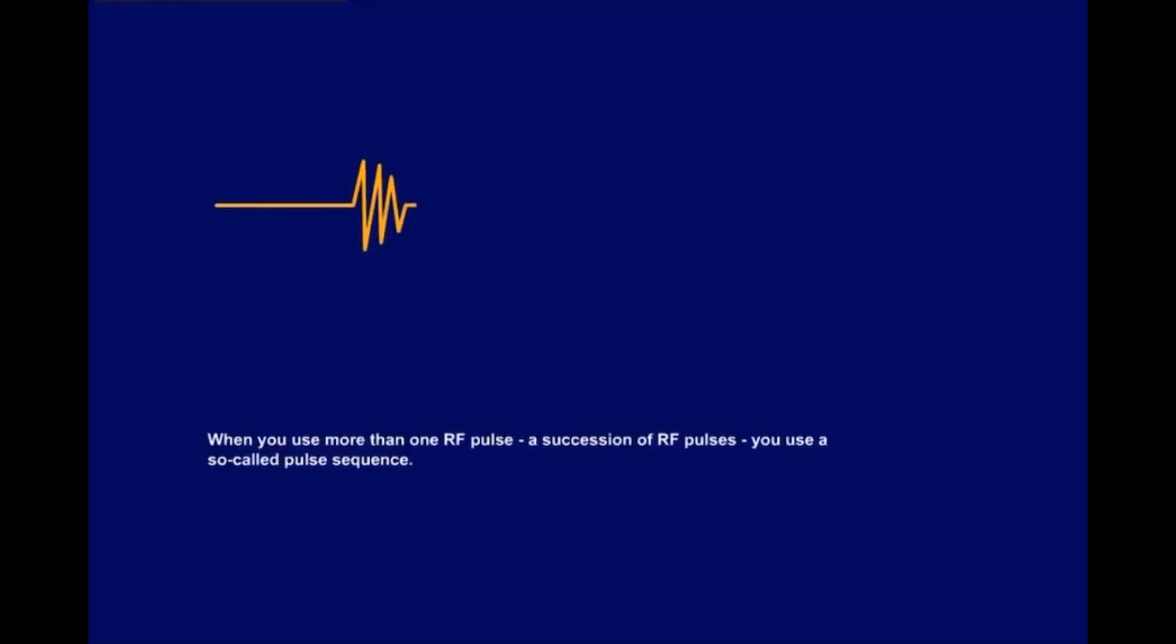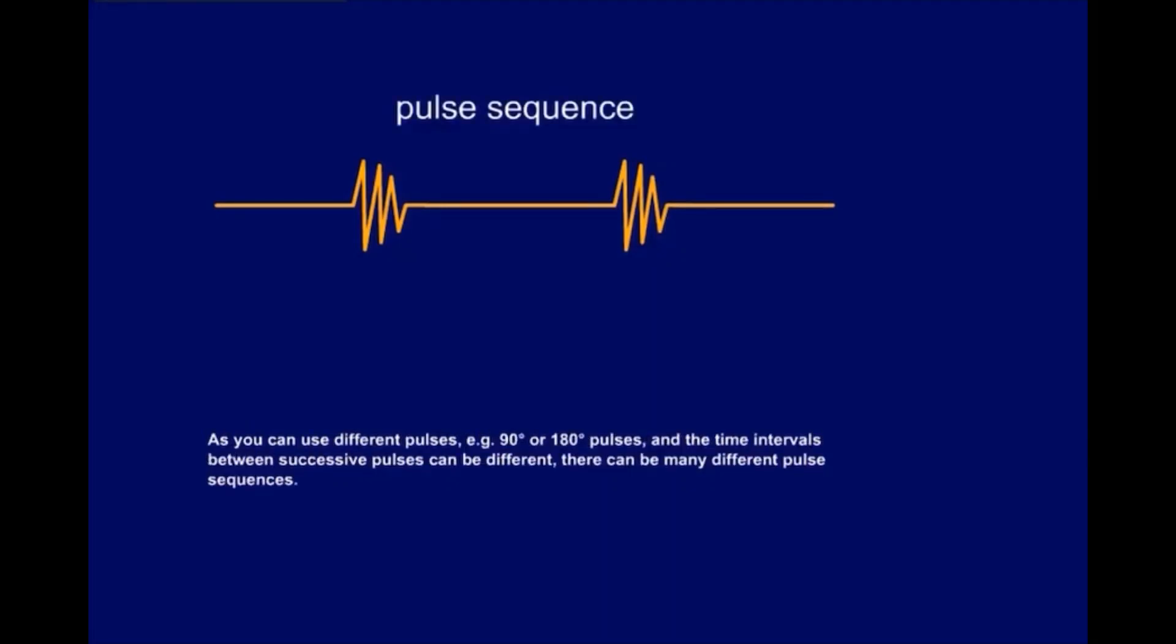When you use more than one RF pulse, a succession of RF pulses, you use a so-called pulse sequence. As you can use different pulses, for example, 90 degrees or 180 degree pulses, and the time intervals between successive pulses can be different, there can be many different pulse sequences.